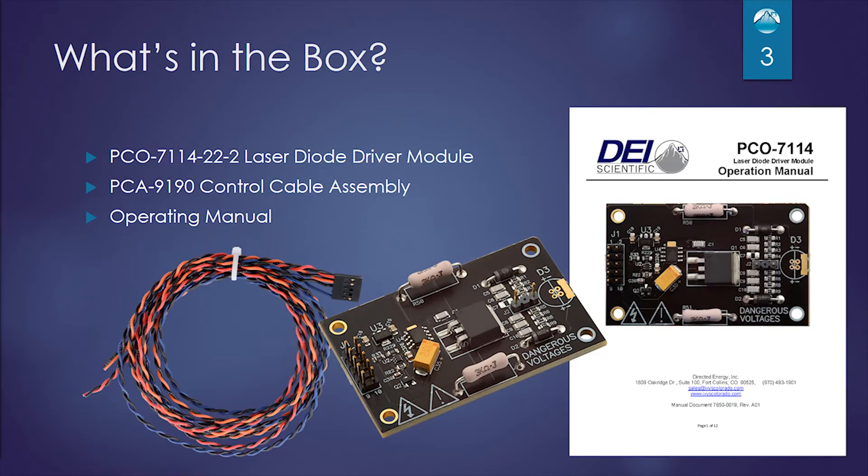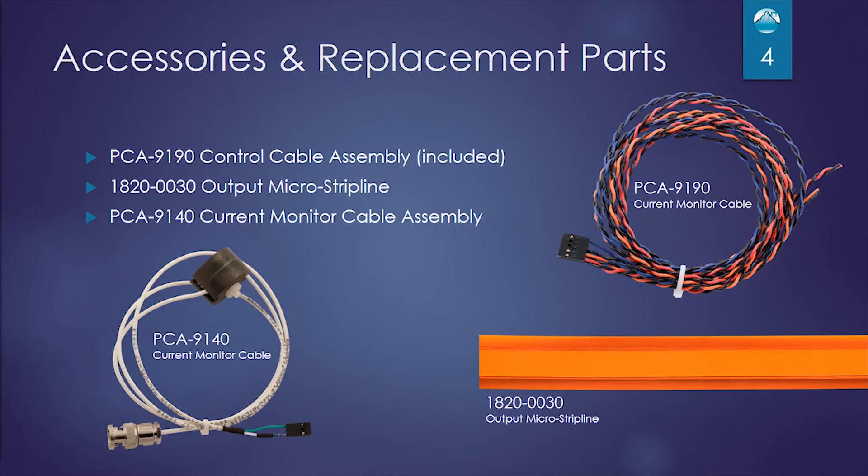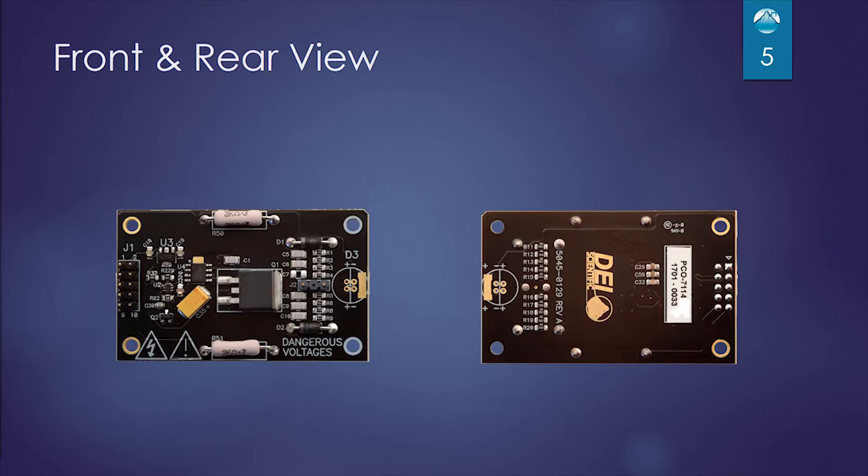When you order a PCO7114, what do you receive? You receive an operation manual, the unit itself, and the control cable. There are also a few optional accessories. You can get additional control cables, an optional current monitor cable or a microstrip line cable.